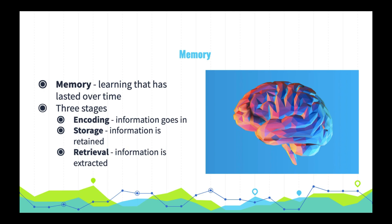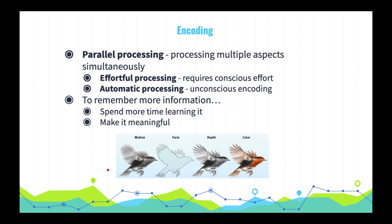Memory — that's learning that has lasted over time. It's information that can be stored and retrieved. There are three stages of memory: encoding — getting information into our brain; storage — retaining that information; and retrieval — getting the information back out. Let's start with encoding.